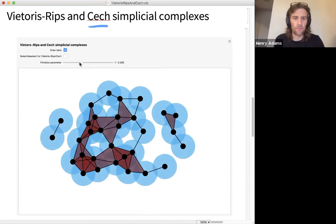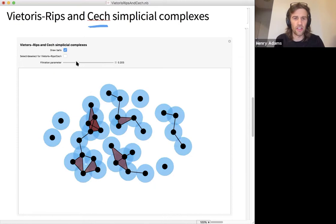All right, so there's a subtle difference between the Čech complex and the Vietoris-Rips complex. Let me just show you the difference. Here's the Vietoris-Rips complex. And then here again is the Čech. Here's the Vietoris-Rips and back to Čech.